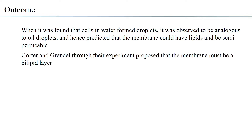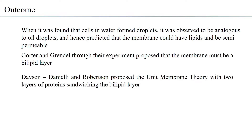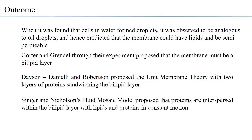Gorter and Grendel, through their experiment, proposed that the membrane must be a bilipid layer. Davison, Danielli and Robertson proposed the unit membrane theory with two layers of proteins sandwiching the bilipid layer. Thereafter, Singer and Nicholson's fluid mosaic model proposed that proteins are interspersed within the bilipid layer, with lipids and proteins being in constant motion.